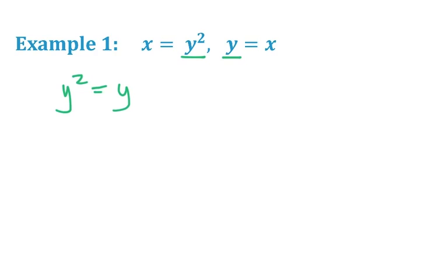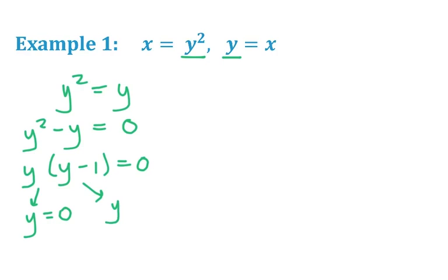So if y squared is equal to y, we could solve this by setting the equation to 0 and then just factoring. So it looks like a greatest common factor between y squared and y is just y. Factoring that out leaves y minus 1, so our two solutions here would be y equal 0 or y is equal to 1.